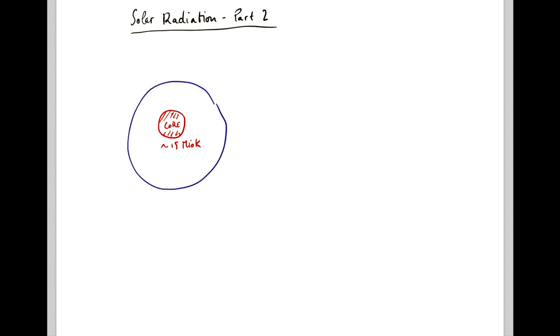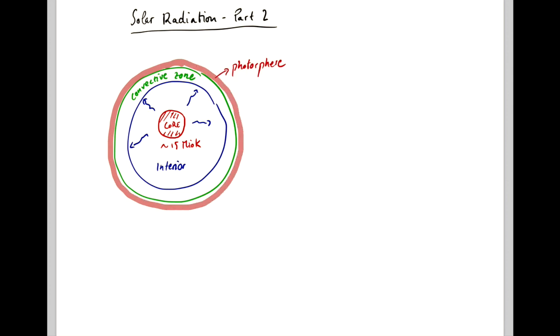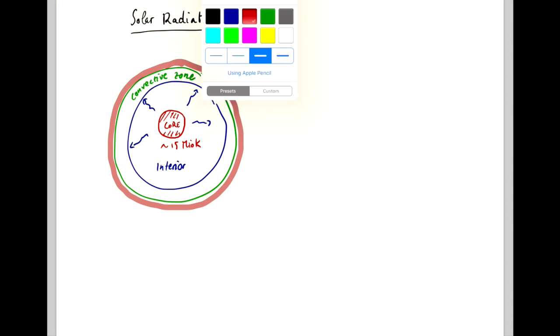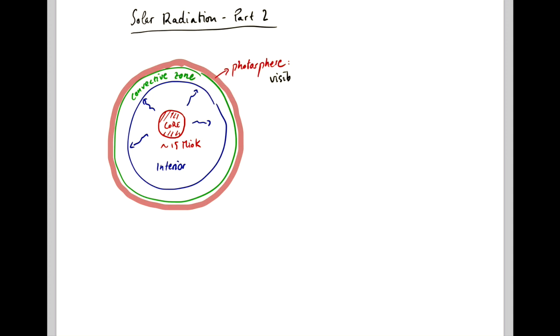And then it has an interior layer and energy diffuses outward from the core through this layer. Then there's a convective zone. And finally we have the photosphere. And the photosphere presents the visible surface of the Sun and it emits most of the radiation that we receive.